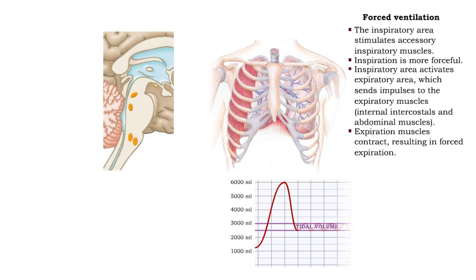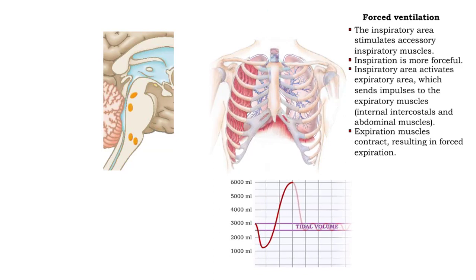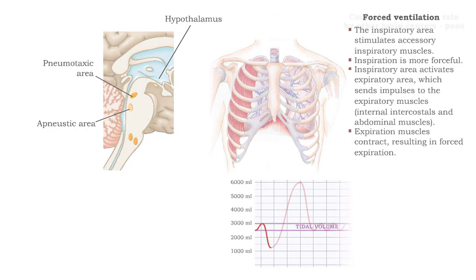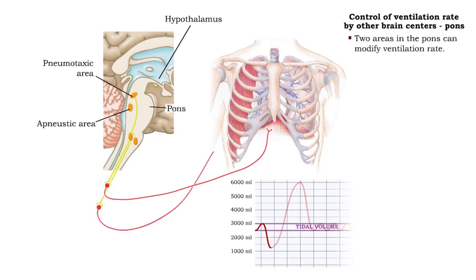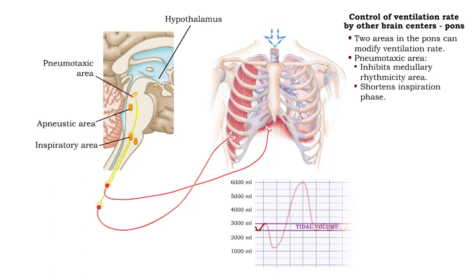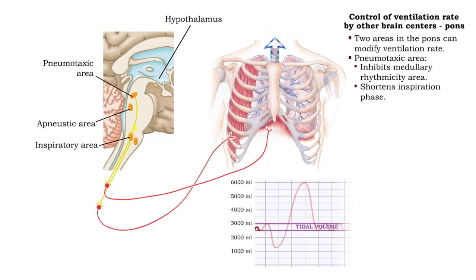The rate of ventilation can also be modified by input from other areas of the brain. Two areas in the pons can modify the rate of ventilation. The pneumotaxic area can inhibit the medullary rhythmicity area, resulting in shorter inspiration phases. This produces short, rapid breathing.